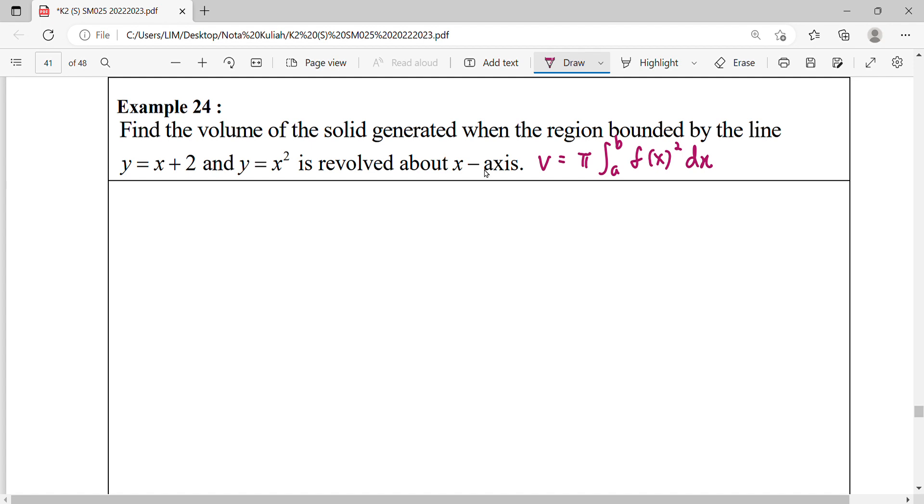So we draw out our graph first. For this linear graph y = x + 2, when y = 0 their x-intercept is -2. When x = 0, y will be 2.